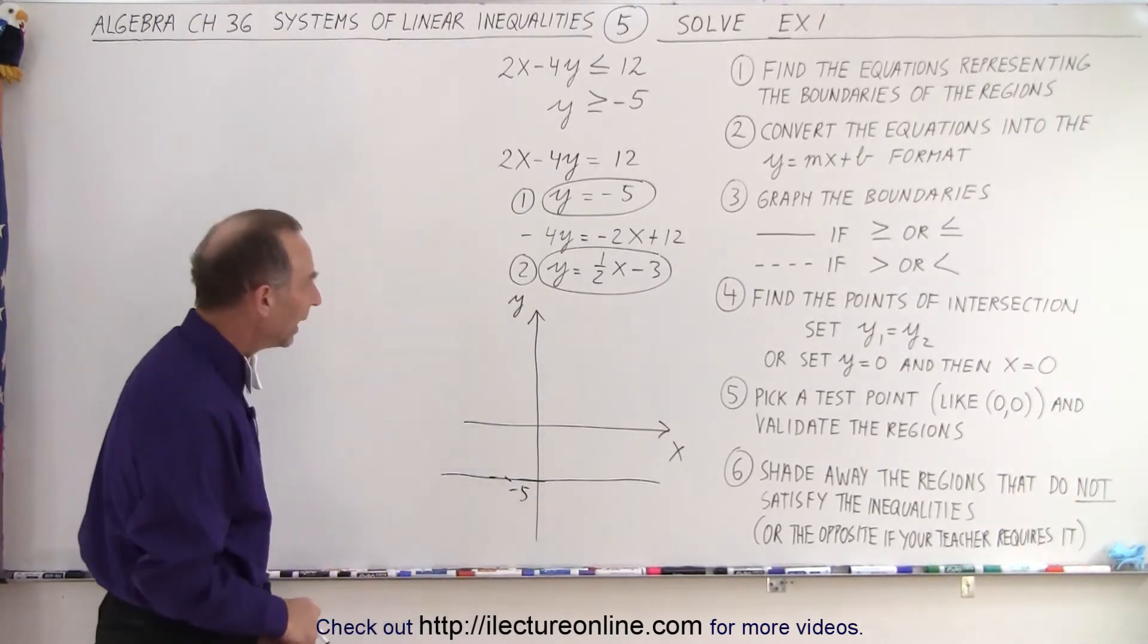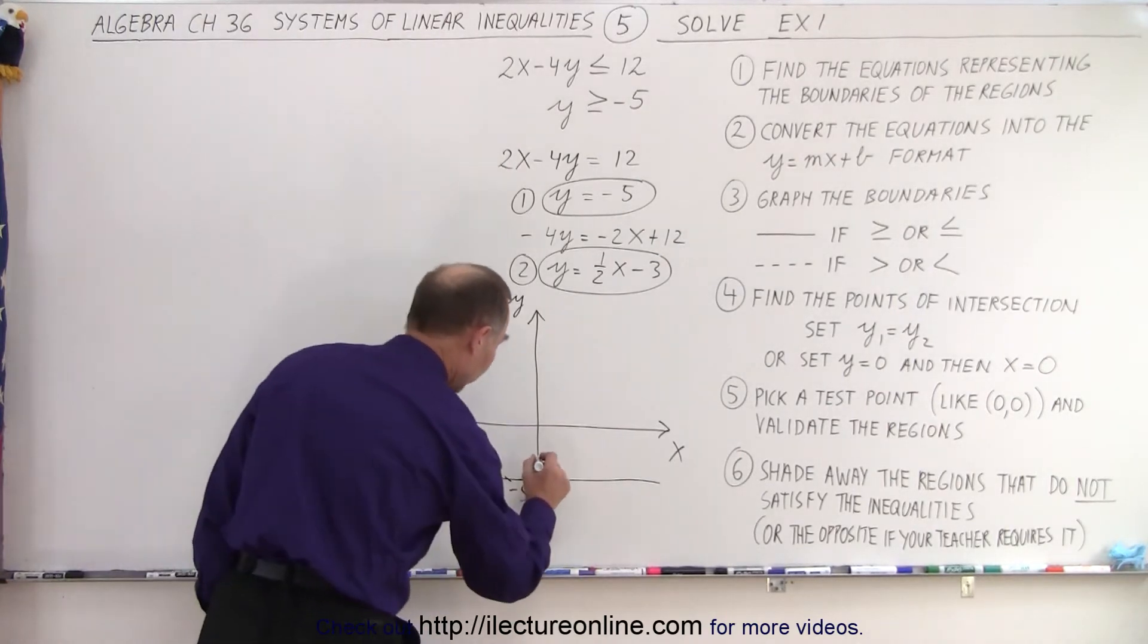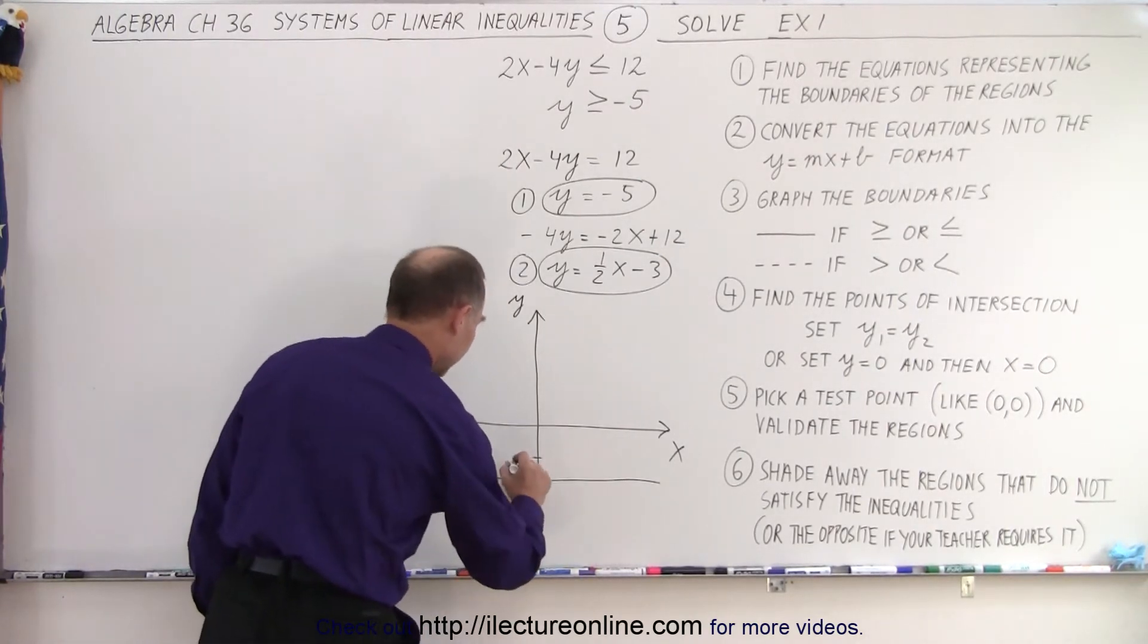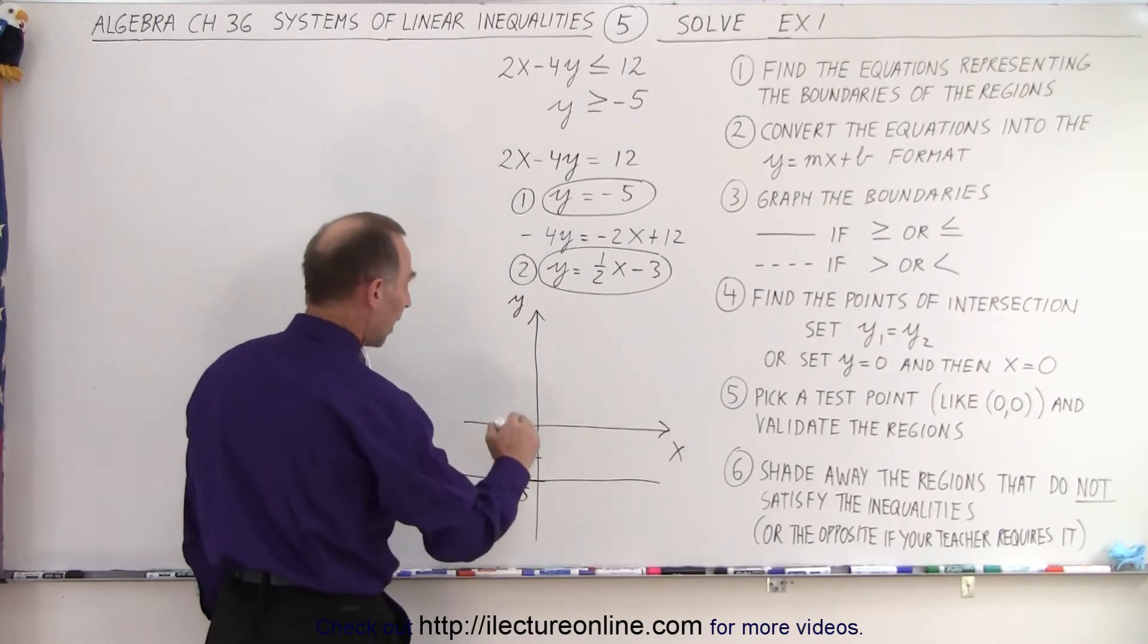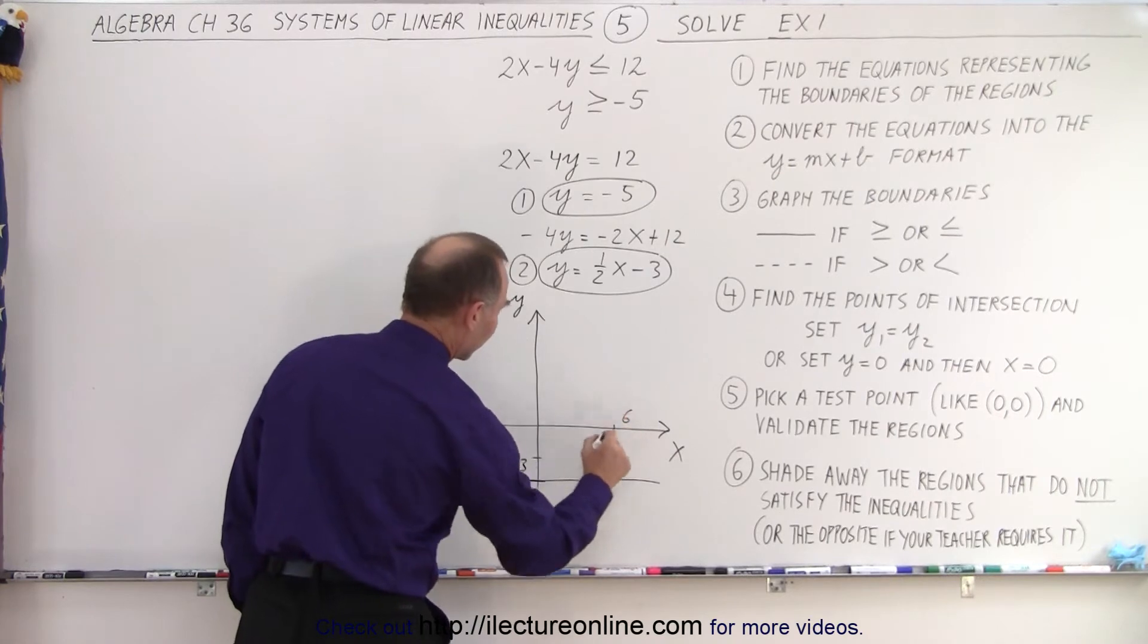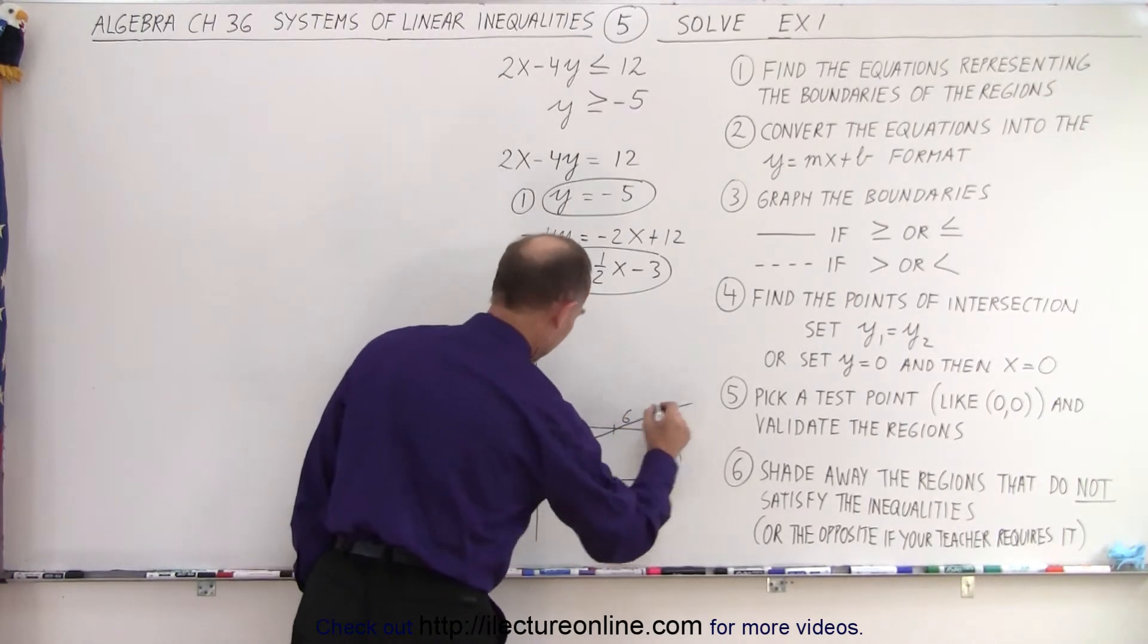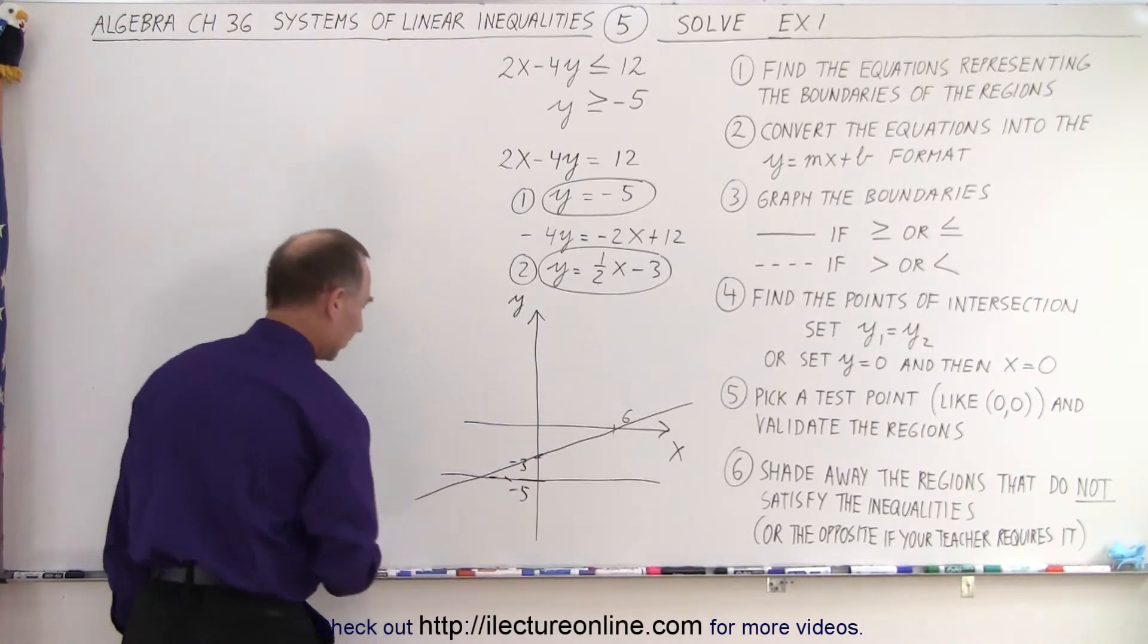All right. And then the next line is y equals 1 half x minus 3. So minus 3 would be about here. The slope is positive 1 half, so that means that we'll hit the x-axis at 6, and then we want a straight line going across like that, and a line coming down like this.